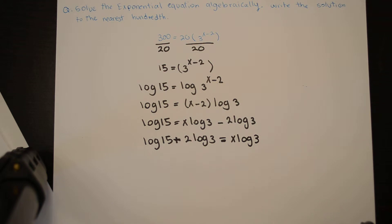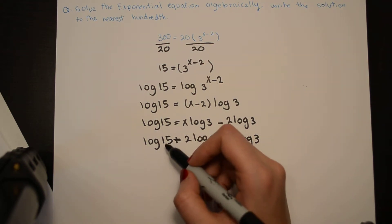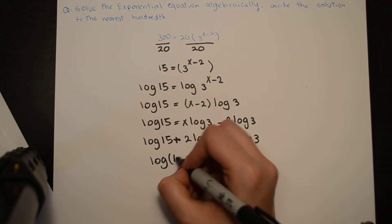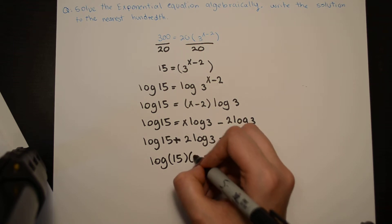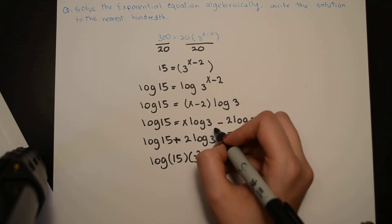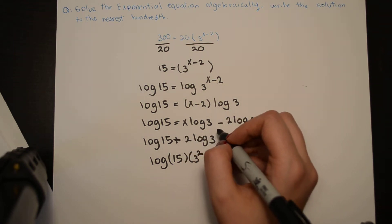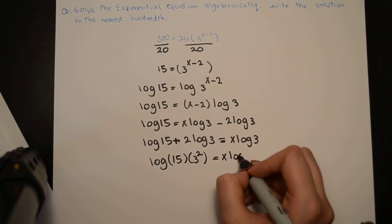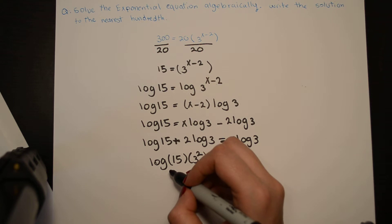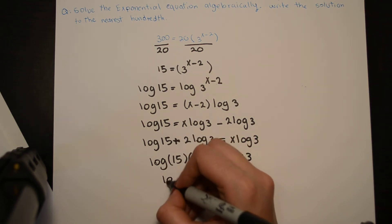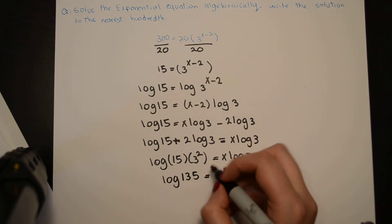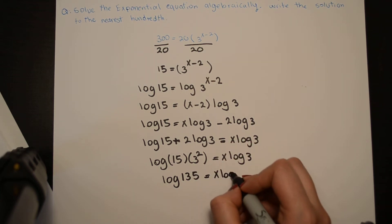Based on the log rules, I can combine log 15 plus 2 log 3 by writing it as log of 15 times 3 to the power of 2. Multiplying this out gives us log of 135, which equals x log 3.